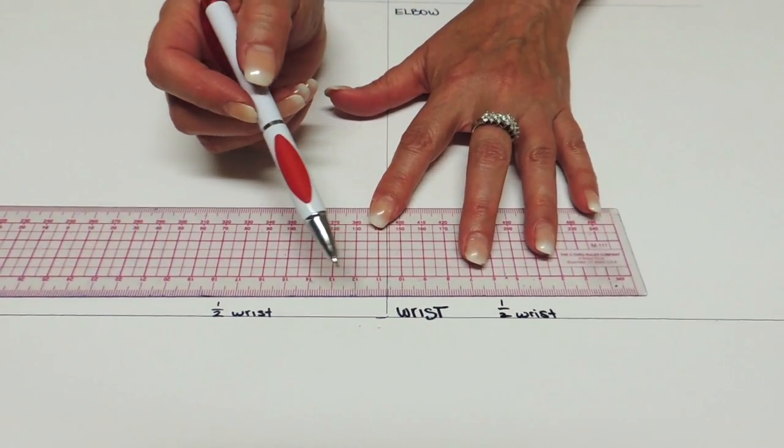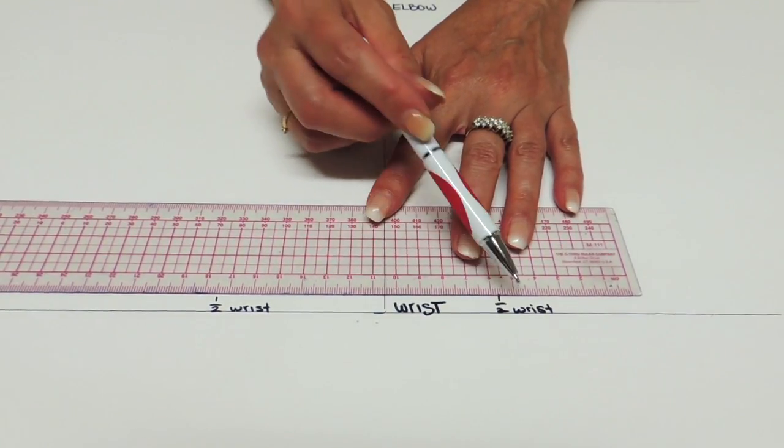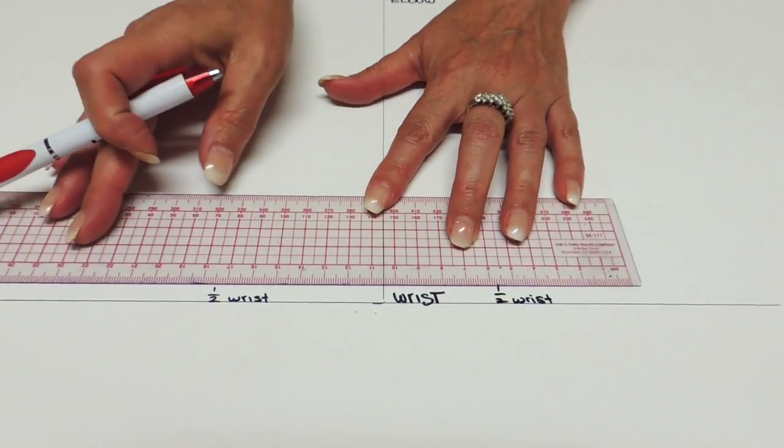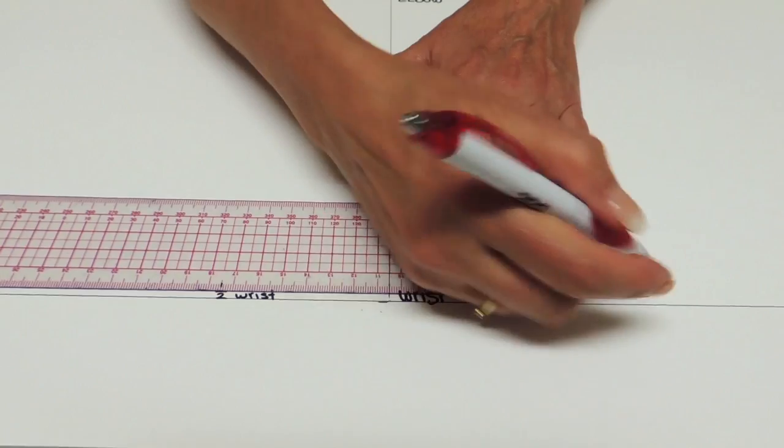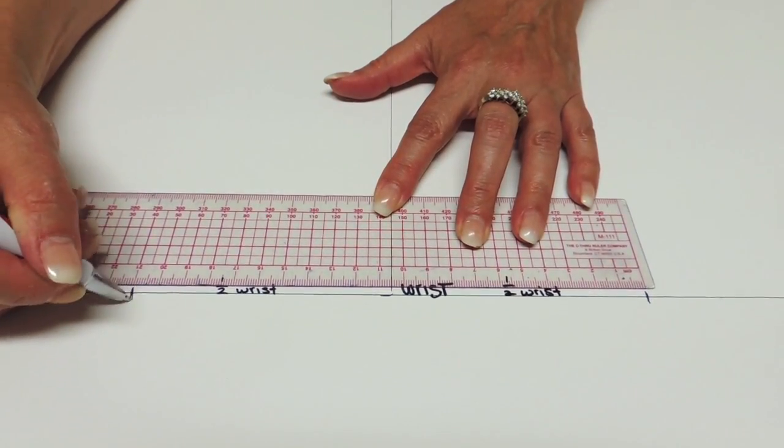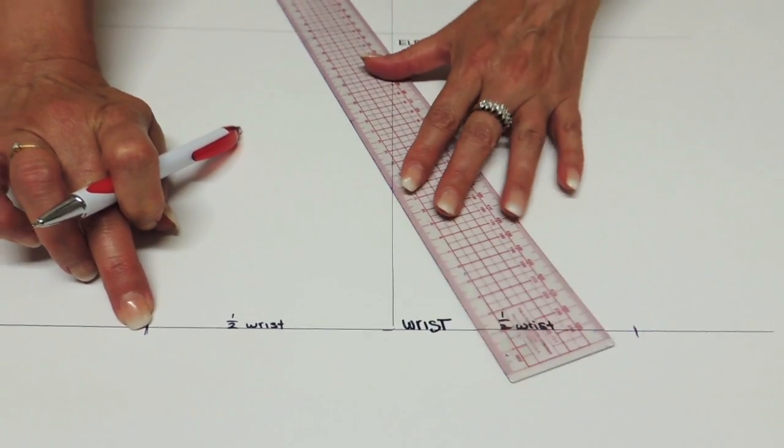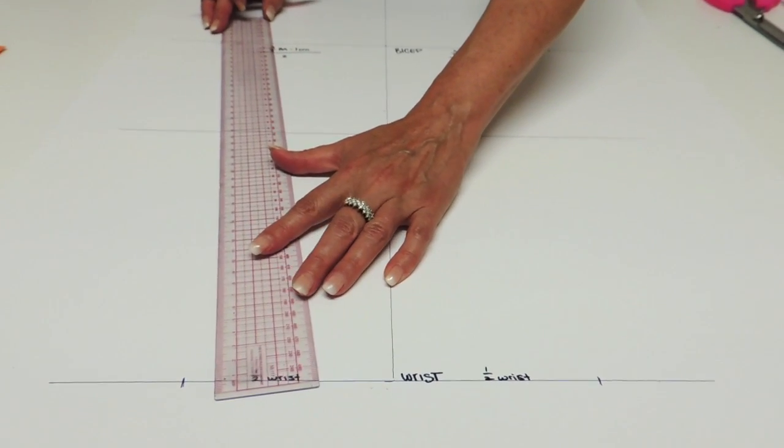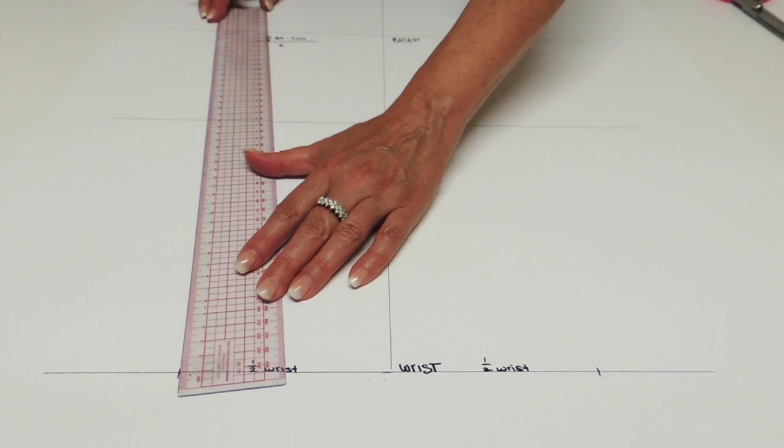So you also got your wrist measurement and you're going to put half of the measurement on each side of the center line. So my wrist was 21. So I put 10.5 on each side and from this point you're going to connect to the bicep point that we found.